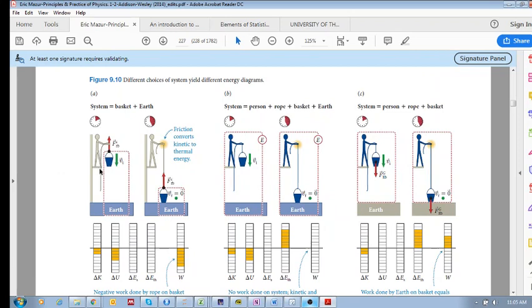A person with a rope attached to a bucket or basket is being lowered down to the ground. You're standing on a ledge lowering a basket to the ground with an initial velocity, then slowing it down until you stop it by tightening your grip on the rope, creating friction.